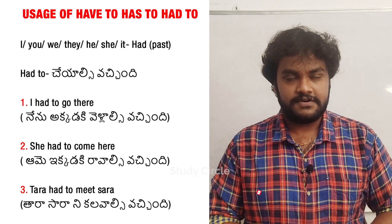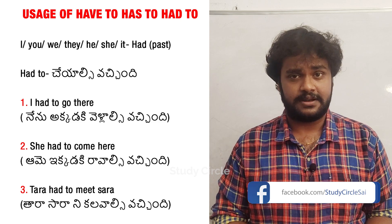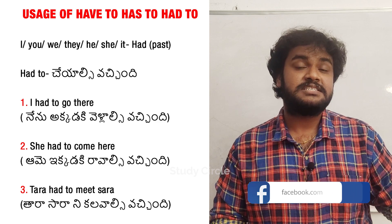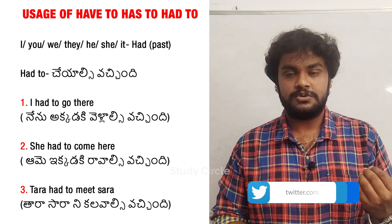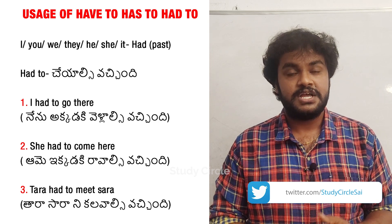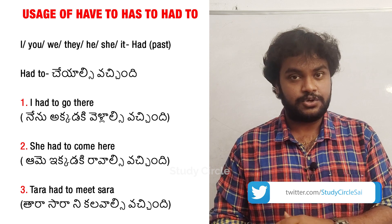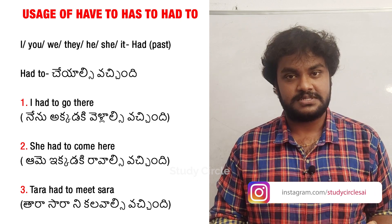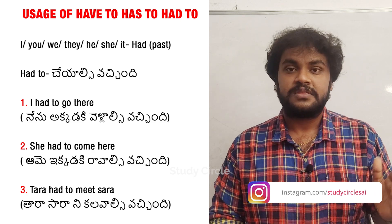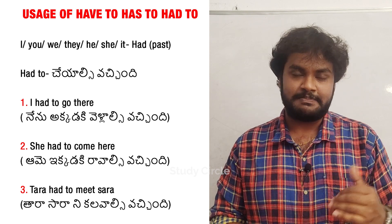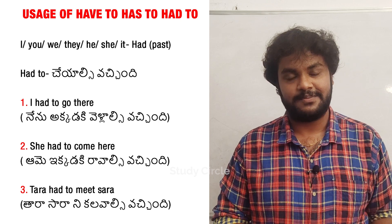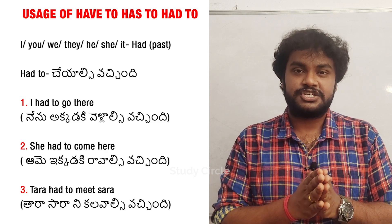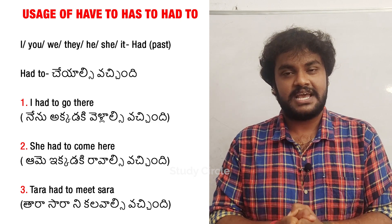Let me give some examples for clarity. First example: I had to go there — meaning I was required to go there in the past. Next: Tara had to meet Sara — meaning Tara was required to meet Sara. So for past tense, we use had to with all subjects, unlike have to and has to.